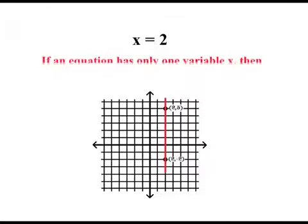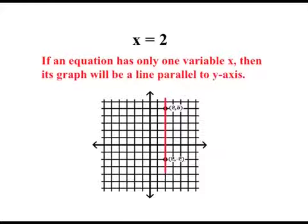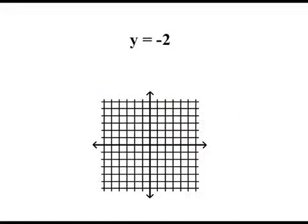We can conclude that if an equation has only one variable x, then its graph will be a line parallel to y axis.